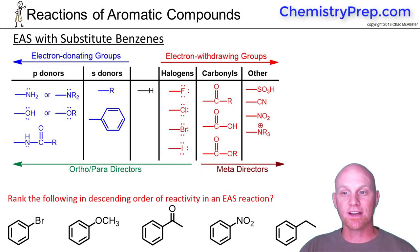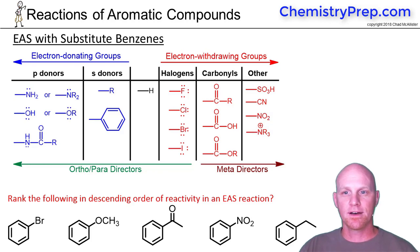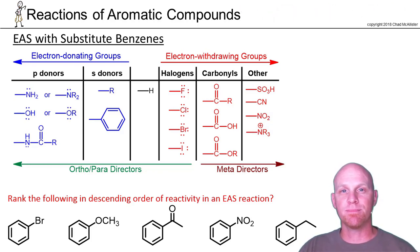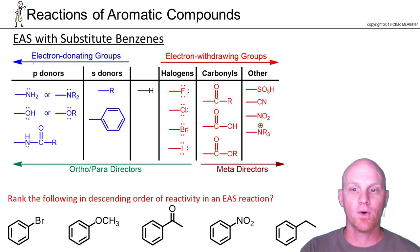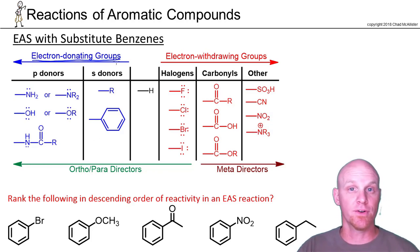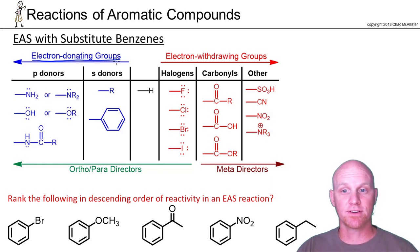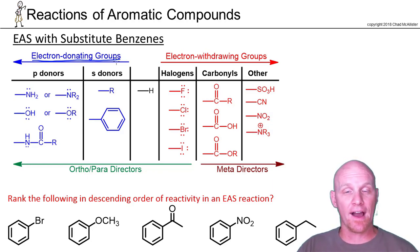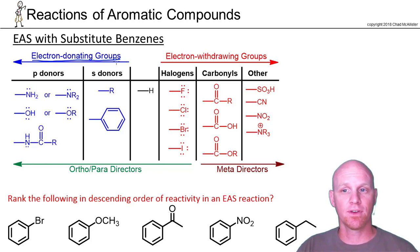Now we've got to visit a variety of electron donating groups and electron withdrawing groups. As mentioned at the beginning of this chapter, for an EAS reaction, benzene is the nucleophile, and it's these electron donating groups in blue that make it a better nucleophile and more reactive in EAS reactions. So for EAS reactions, these electron donating groups are activating groups, and these electron withdrawing groups are deactivating groups.